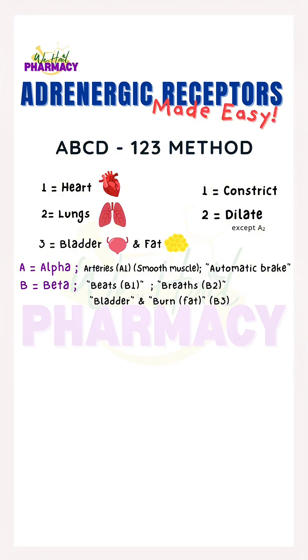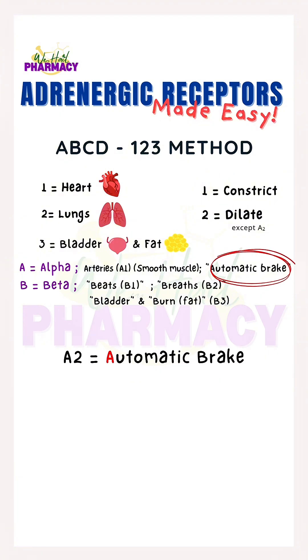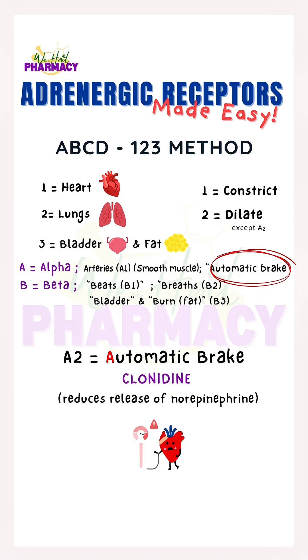Alpha-2, on the other hand, means automatic break. An example drug here is clonidine, which is used to treat high blood pressure by activating A2 to inhibit further sympathetic stimulation.